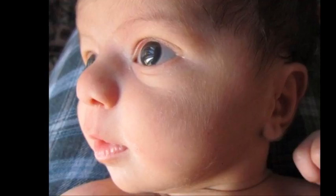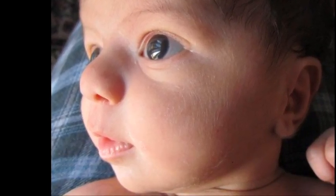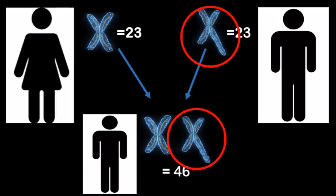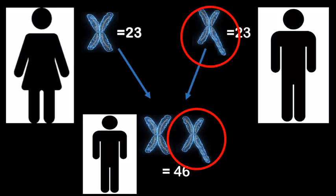Chromosome abnormalities are a natural occurrence. Sometimes they just happen. Sometimes the condition is inherited from the parents who also show the abnormality or sometimes it happens by chance and it's not inherited. This is called de novo.